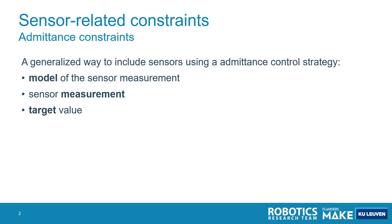Sensors are integrated using a generalized admittance control strategy. This involves three expressible expressions. The first expression corresponds to the model of the sensor measurements, explaining how the measurement is related to joint and feature variable skew and also to the time variable. The second expression represents the actual measurement coming from the sensor, and the third expression expresses the desired target for the sensor value.